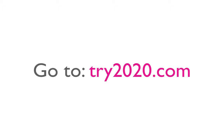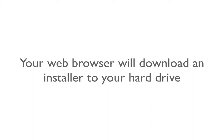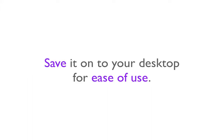Step 1: Downloading the installer. First, go to try2020.com. Choose either the Mac download or the Win download from this screen. Your web browser will download an installer to your hard drive. Save it on your desktop for ease of use.